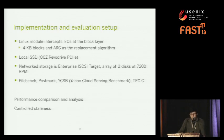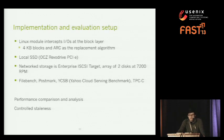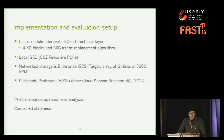For evaluation, we implemented this cache on Linux as a Linux kernel module at the block layer, intercepting every I/O. We used 4K page block sizes and ARC as the replacement algorithm. We used a local enterprise-class SSD — an OCZ PCI Express device — and iSCSI, modifying the enterprise iSCSI target implementation to support journal-side transactions. We used an array of two disks at 7,000 RPM. Workloads included Postmark, Filebench FileServer, TPCC (an OLTP workload), and YCSB, a Yahoo workload generator for key-value stores.